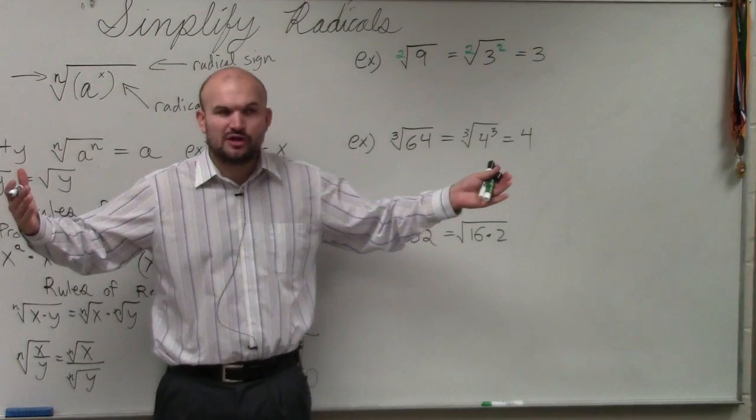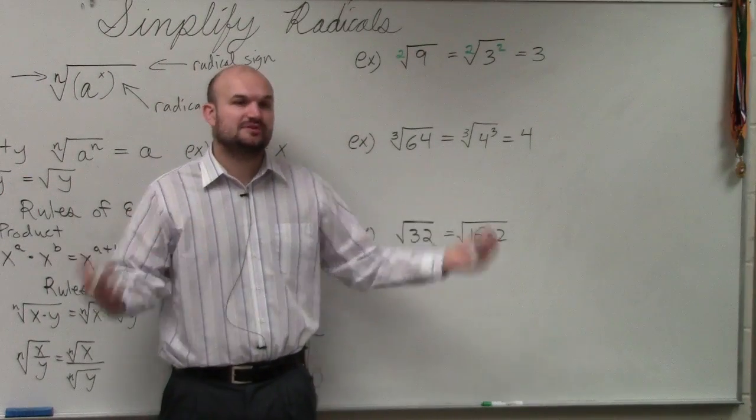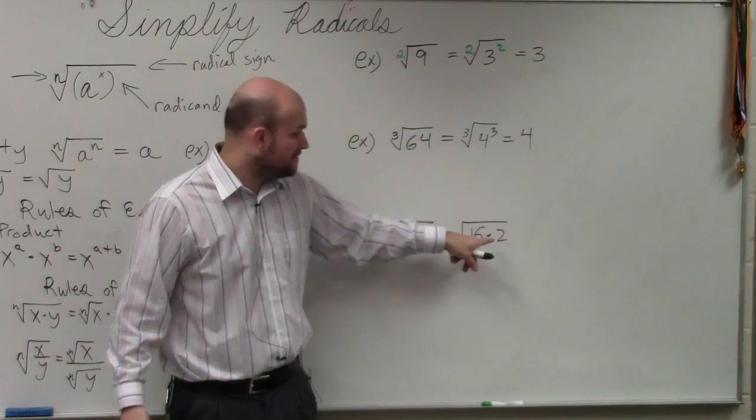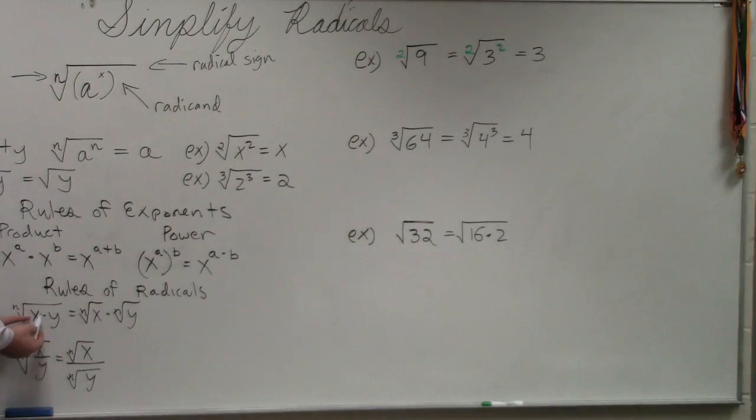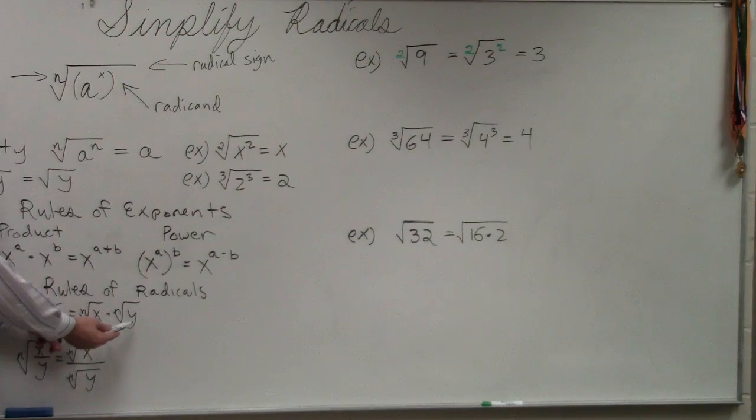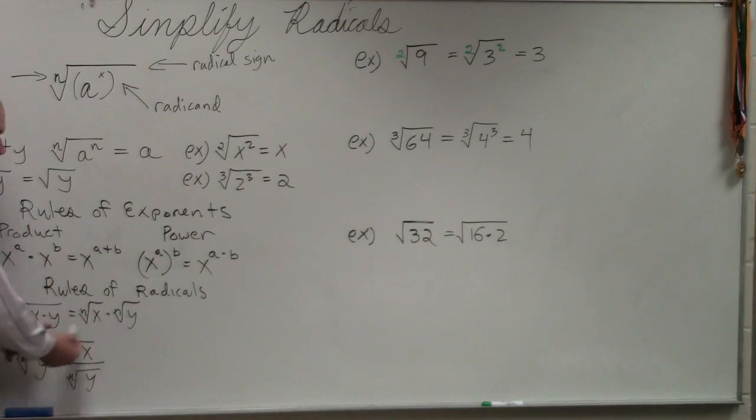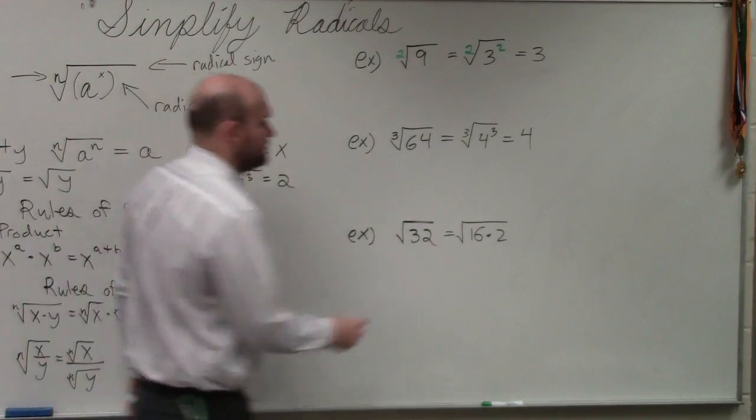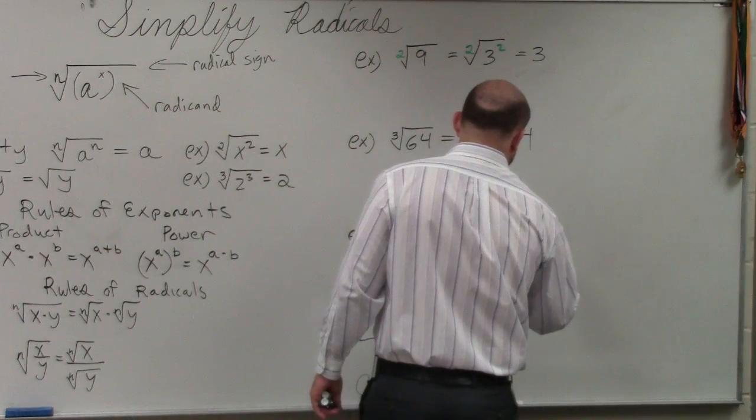Now, just for this part, I usually don't go to this next step, but just for this process, I'm going to do that. Based on my rules of radicals, if I have 16 times 2, does it make sense to break that up into square root of 16 times the square root of 2? Yes, using that rule of radical. So for this example only, I'm just going to do it this way.